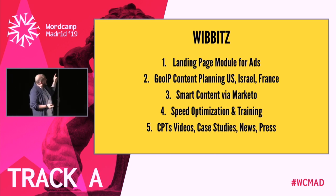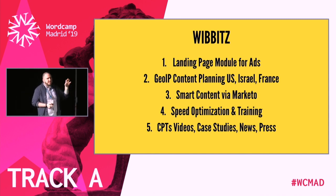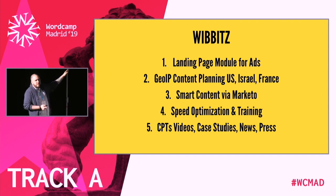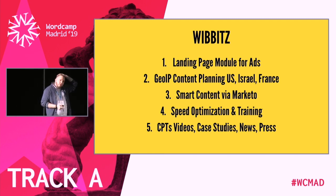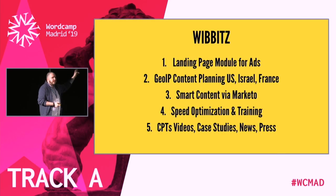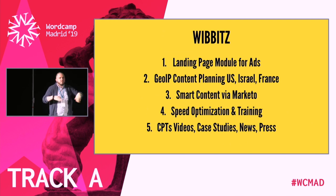The second case study is an AI startup. We did similar landing page modules for ads — an easy sell since everyone's running Facebook and Twitter ads with garbage landing pages. We did GIP content planning for offices in the US, Israel, and France. We had a 50% drop-off rate on Marketo form signups, so we used WP Engine GIP to target and serve different forms by region — we reduced drop-off, though at GDPR we did lose some. We also did speed optimization, training, and five different custom post types each managed by a different team across regions.